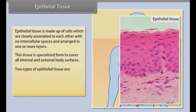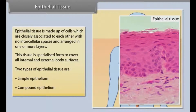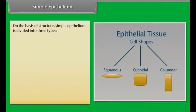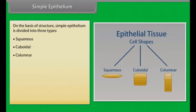The two types of epithelial tissues are simple epithelium and compound epithelium. On the basis of structure, simple epithelium is further divided into three types: squamous, cuboidal, and columnar.